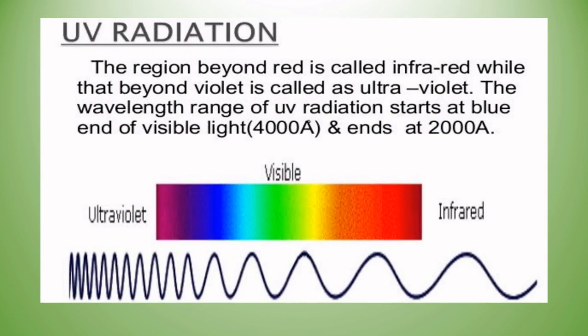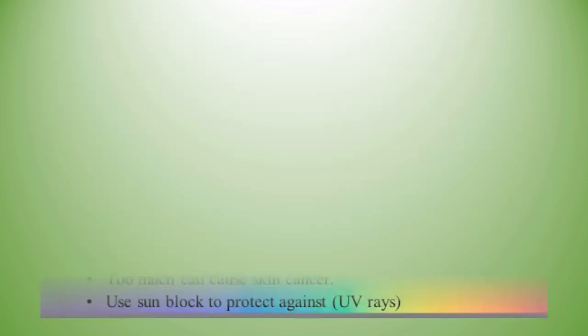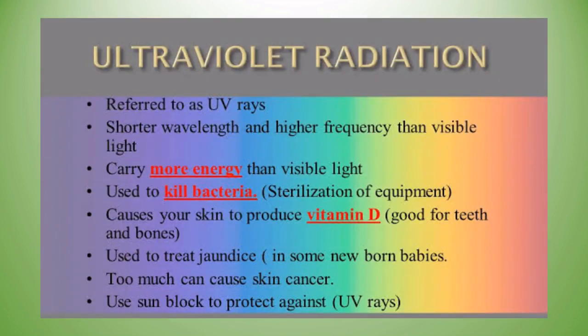The region beyond red is called infrared, while that beyond violet is called ultraviolet. The wavelength range of UV radiation starts at the blue end of visible light at 4000 Angstroms and ends at 2000 Angstroms. UV has shorter wavelength and higher frequency than visible light, carries more energy, is used to kill bacteria, and causes the skin to produce vitamin D.